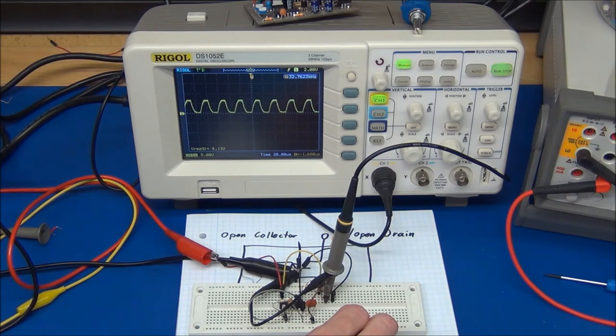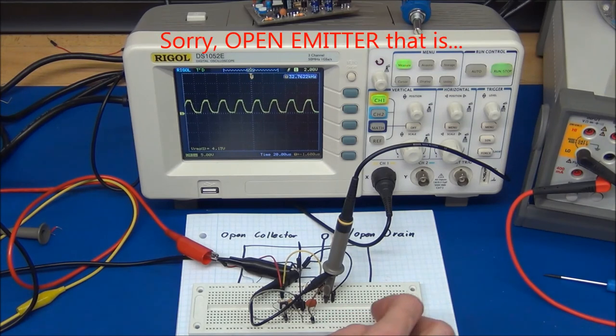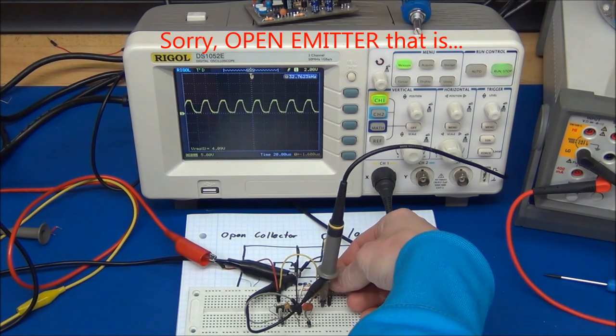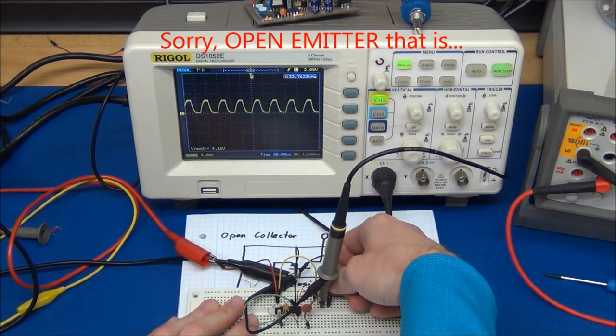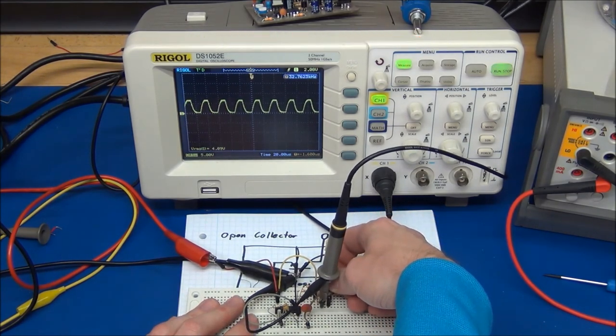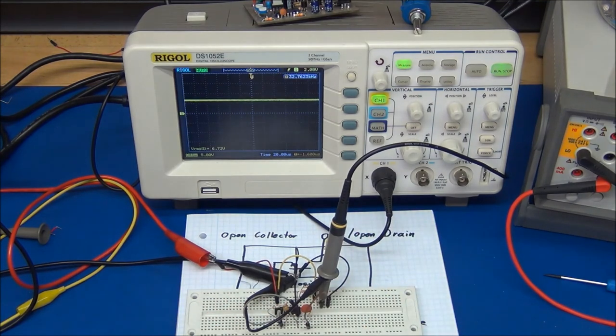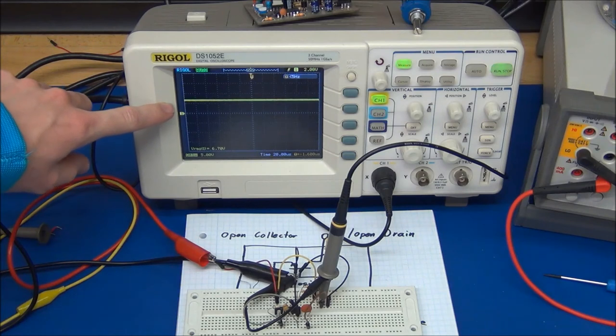And if you were to use just an open collector output, we can try to remove the PNP transistor. That will make it an open collector output.